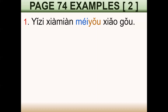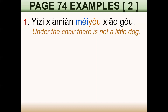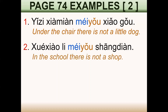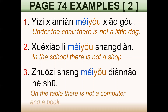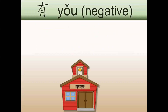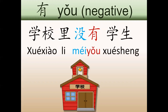We continue now with the negative for the verb yǒu. Remember that we have to use méi to make the negative for yǒu. First example: 椅子下面没有小狗 — under the chair, there is not a little dog. Example 2: 学校里没有商店 — in the school, there is not a shop. 桌子上没有电脑和书 — on the table, there is not a computer and a book. Remember, to make the negative we use méi yǒu. With the verb yǒu, we don't use bù to make the negative — we use méi.